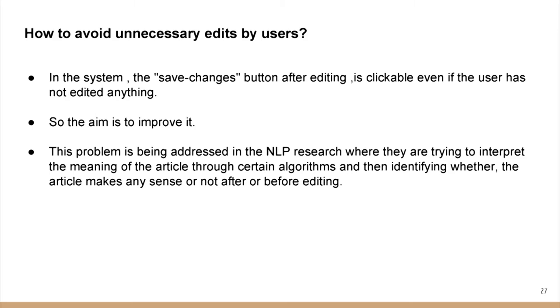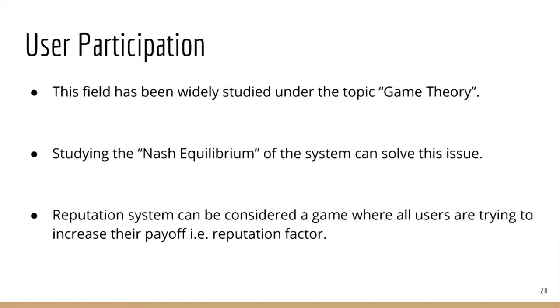To avoid unnecessary edits by users, there is NLP research going on where they try to develop the meaning of an article and check whether a given edit — such as inserting a comma — is actually making sense. If not, it is rejected; if yes, it is included. This is part of ongoing NLP research and has not been fully implemented yet. The last future improvement is game theory — thinking about why users will come to, join, and engage with the community. This involves concepts such as Nash equilibrium. You can refer to the link given below, which contains documentation on all of this for future references.